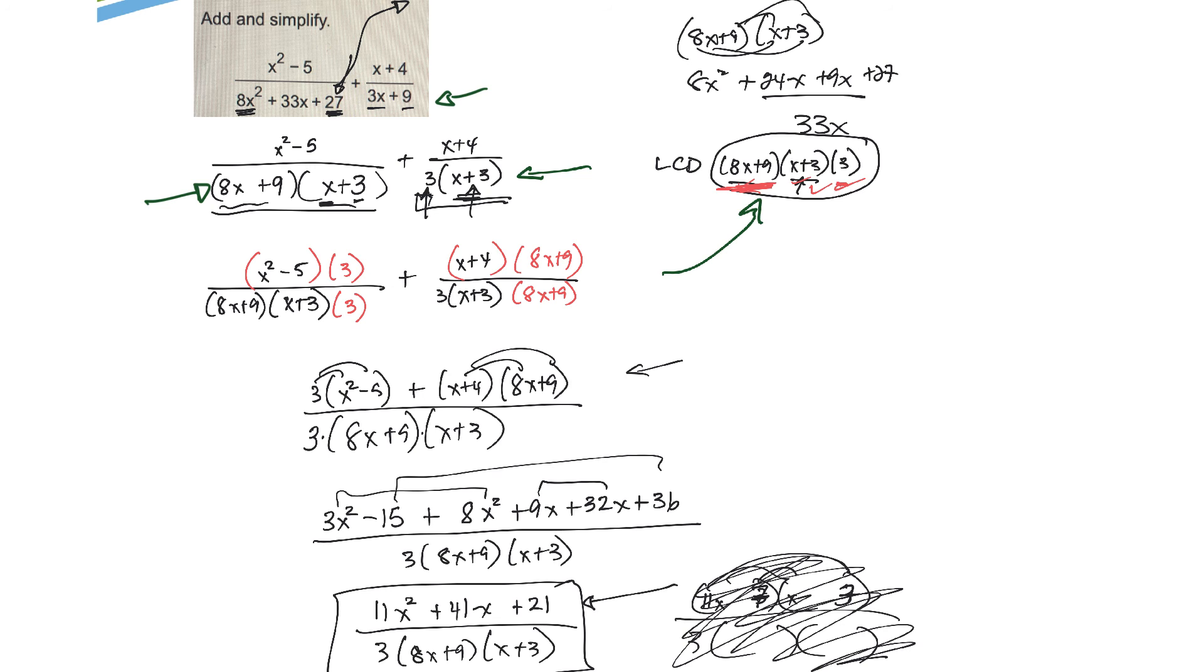and then make sure you account for any factors that you don't have on each and then simplifying that. There's lots and lots of places where you could go wrong. Good question. Good question.